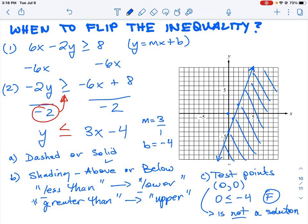That's what we have here - zero zero is not in the shaded region, so that means all those numbers above the line are not solutions, which means we are just shading the lower part of the line.